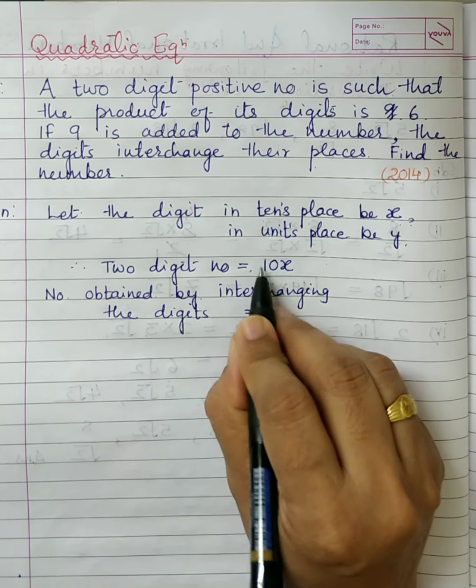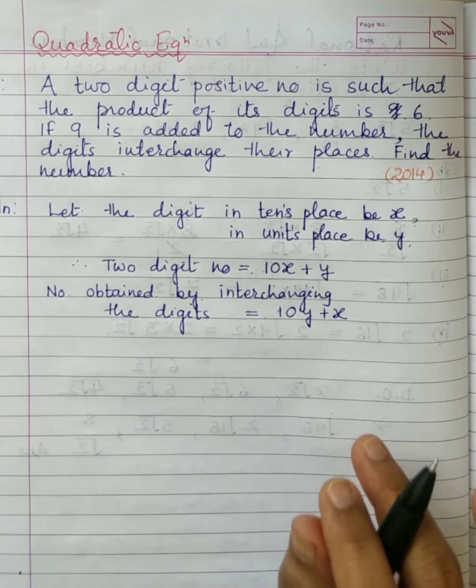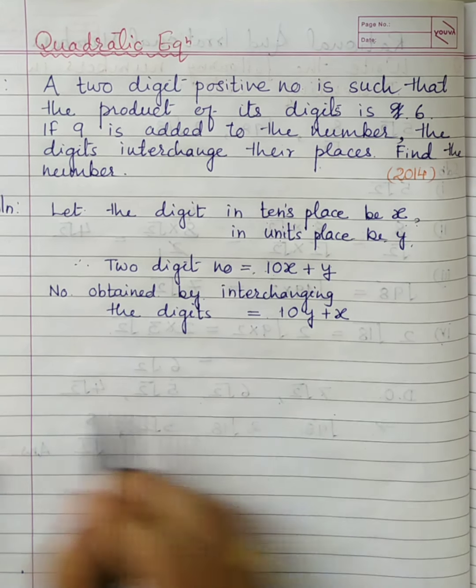When the second condition mentions that the digits get interchanged, let us also frame the number obtained by interchanging the digits. Our assumption is units place is y and tens place is x, so the number is 10x + y. The number obtained by interchanging the digits will be 10y + x.